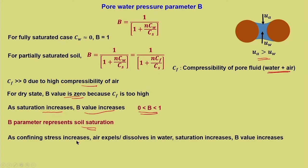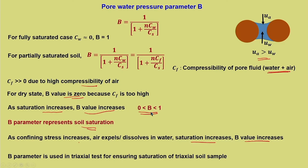As confining stress increases, air expels or gets dissolved in water, saturation increases, and B value increases. This is a very effective way to use B parameter to ensure the saturation of a triaxial soil sample. In triaxial testing, after mounting the soil, the first procedure is to saturate it. The B parameter from Skempton's equation is used to check whether the soil is actually saturated.